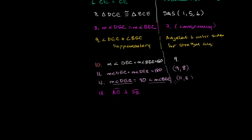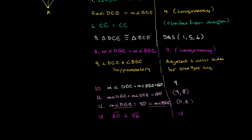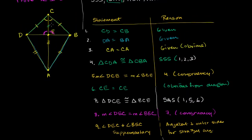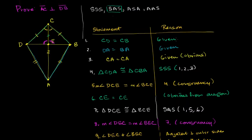And we're done. We've completed a two-column proof and proven that this line segment is perpendicular to that line segment — using the SSS postulate and the side-angle-side postulate.